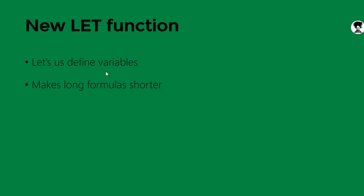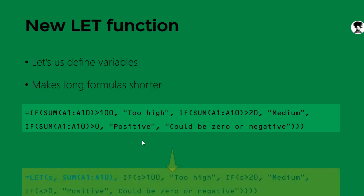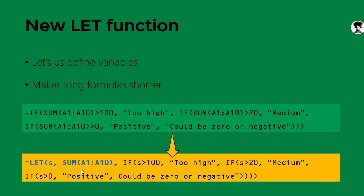Now let's look at the LET function. LET lets us define variables to make long formulas shorter. A simple example: a nested IF on SUM(A1:A10) — if greater than 100 then 'too high', if greater than 20 then 'medium', if greater than 0 then 'positive', else 'zero or negative'. The portion SUM(A1:A10) is repeated several times. With LET, we define a variable S to hold SUM(A1:A10), then just use S throughout. Everything else is nested inside the LET function.